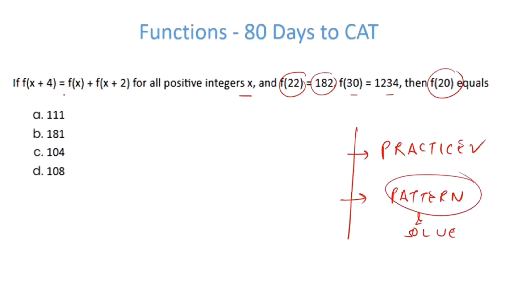The pattern is very simple. I have something relating fx, fx plus 4 and fx plus 2. Here I have 22, I have 30 and I have to find 20, which basically means that if 20 is x, then this is x plus 10 and this is x plus 2. I have to relate fx plus 10 with fx plus 2 and fx. At least now the requirement is clear. Now let's see how can we build up on this pattern.